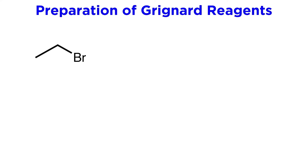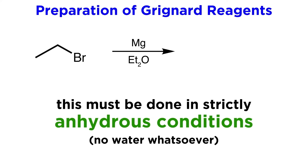Here we have a primary alkyl bromide. We will allow this to react with elemental magnesium in diethyl ether solvent. We must note that Grignard reagents must be prepared in strictly anhydrous conditions — there can be no water in solution, not even a trace amount.